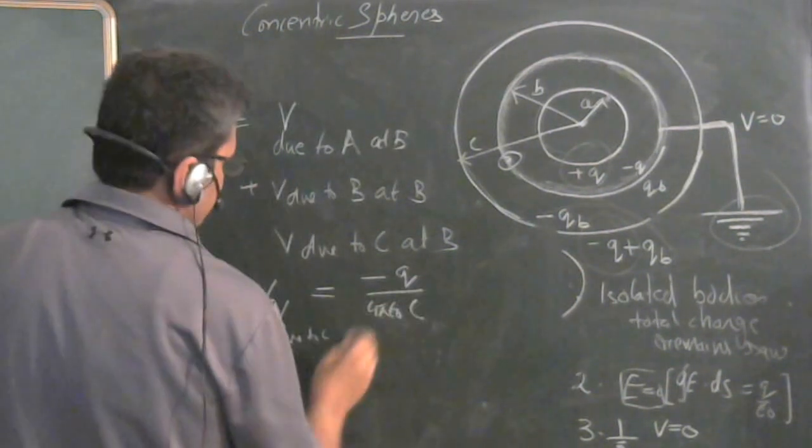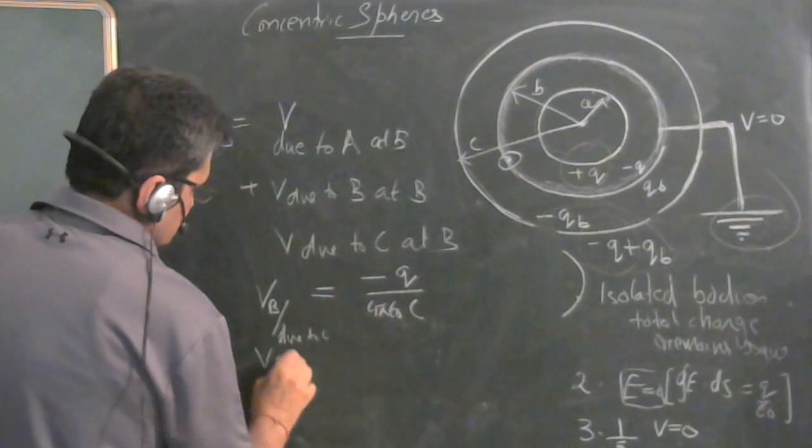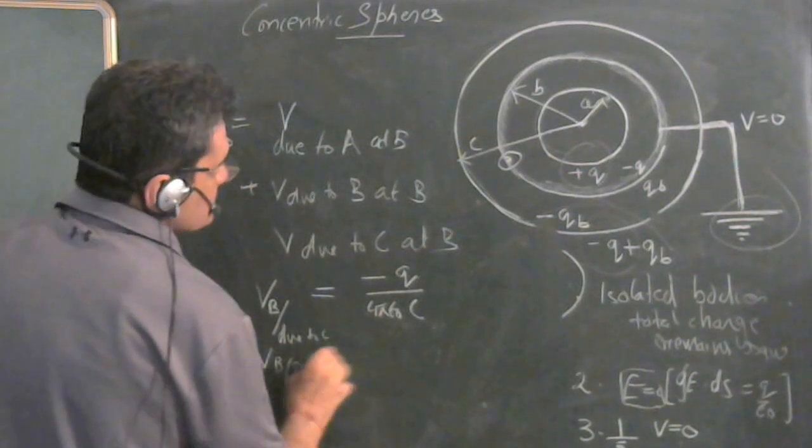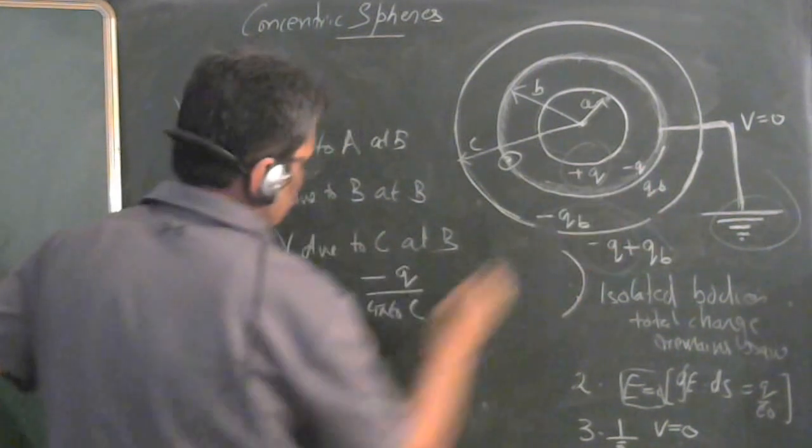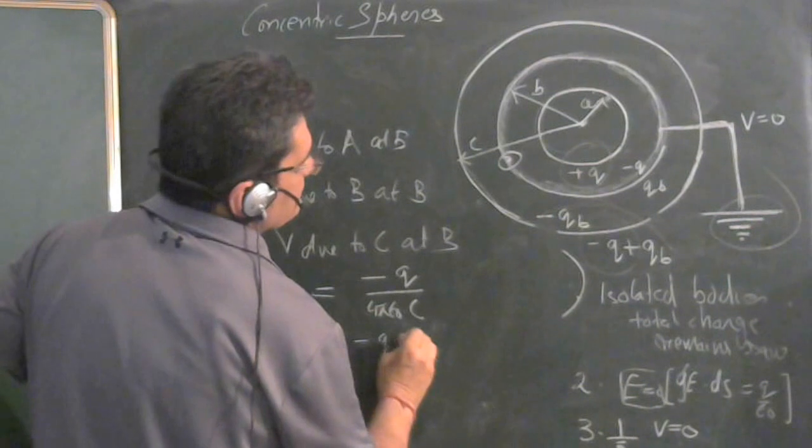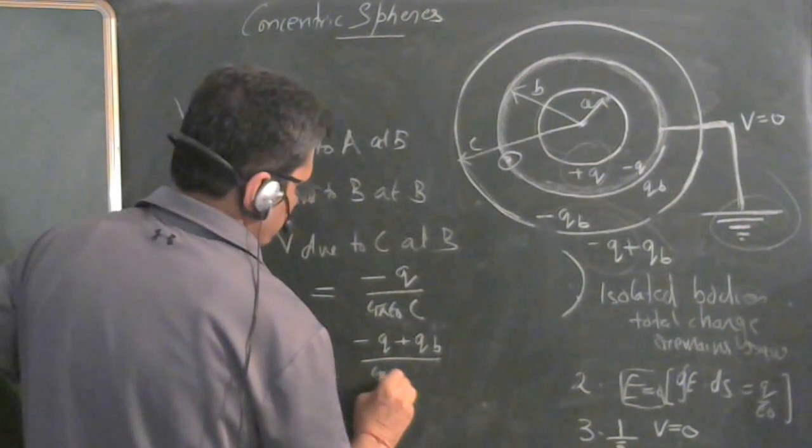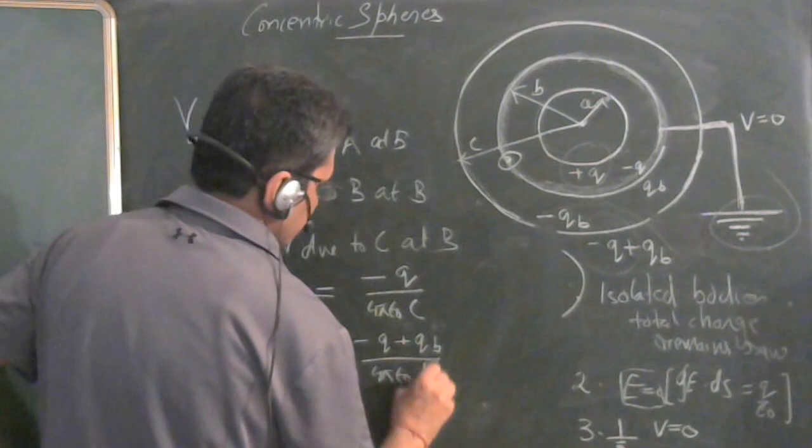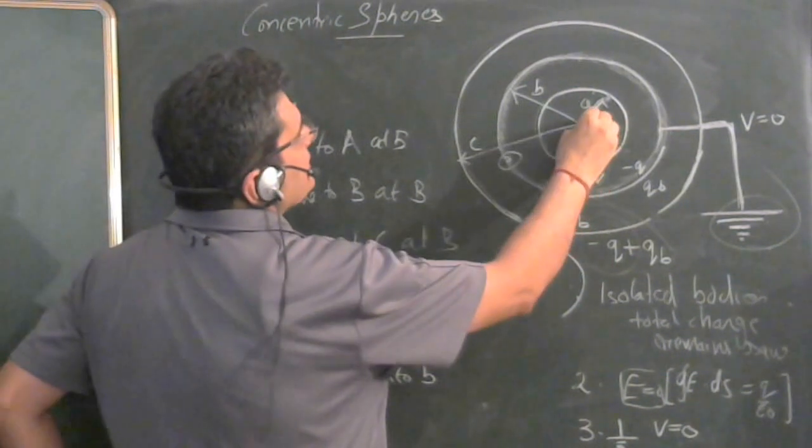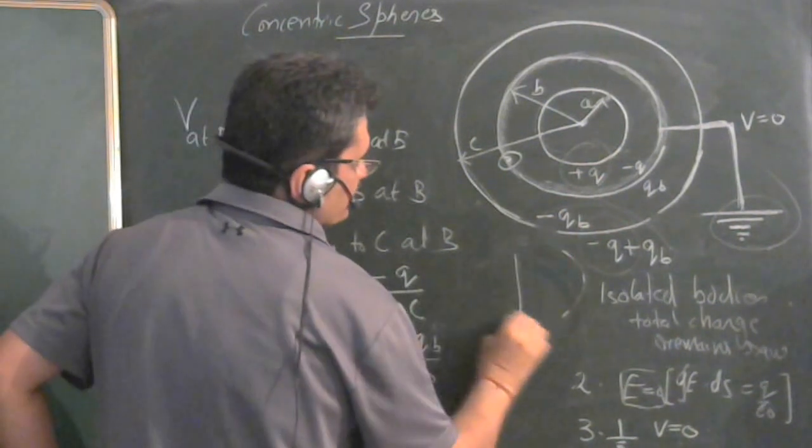So this is the potential one. Then what is the potential of B due to B? B due to B would be what is the total charge here? Minus Q plus QB upon 4 pi epsilon zero divide by B. What is the potential of A at B?